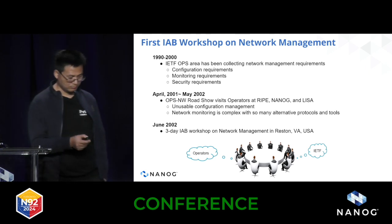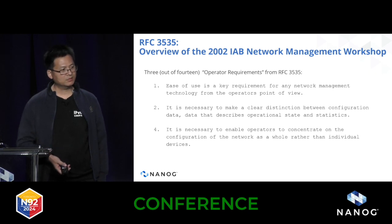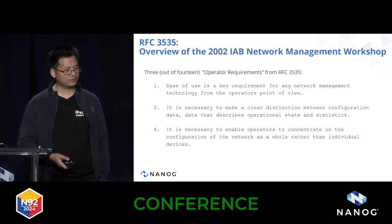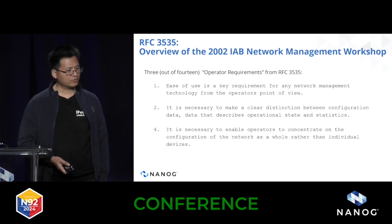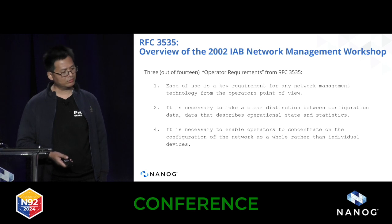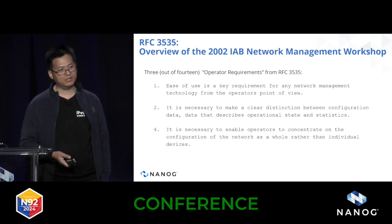In this first workshop, a bunch of operator requirements and recommendations emerged, well documented in RFC 3535, which provides an overview of the first IAB workshop on network management. You can see 14 requirements and 8 recommendations discussed. Three key operator requirements stand out: first, ease of use is a key requirement for any network management technology — it's crucial in determining whether technologies get integrated or deployed. Second, a clear distinction must be made between configuration data and operational state data; this is interesting because it applied in 2002 and still applies today, though we've moved from two separate data models to one single unified model.